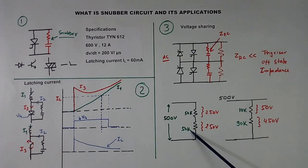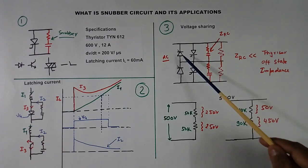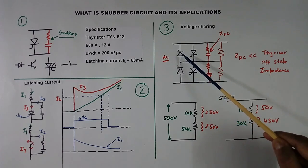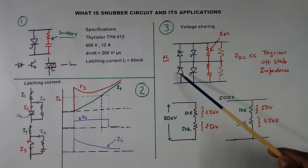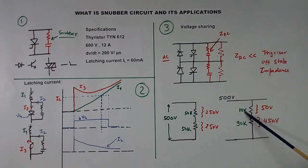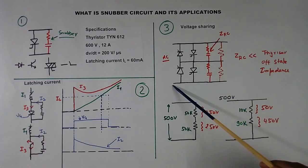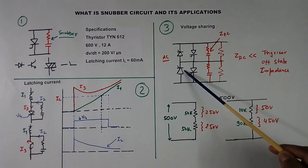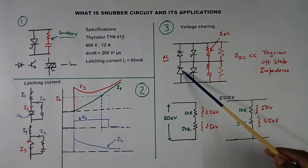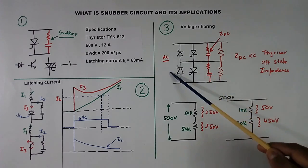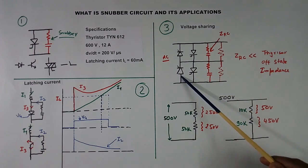If these resistances are not equal. Say this resistance is 10K ohm and this resistance is 90K ohm. Then voltage sharing will not be equal. Here you will get only 50V. Here you will get 450V. In case of thyristor, leakage impedances are not equal thyristor to thyristor. They have lot of variation. Because of variation, voltage given here does not divide equally. So thyristor may fail. Whichever has more voltage, that thyristor may fail.